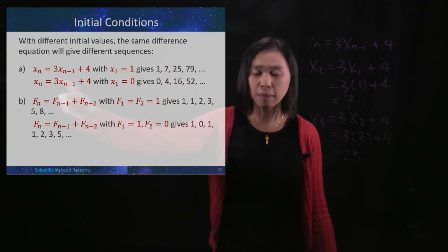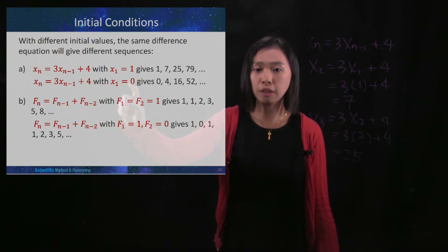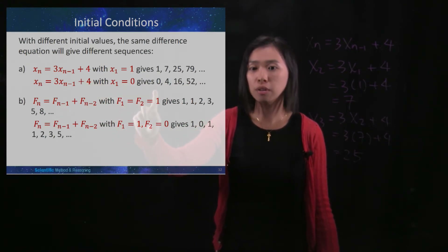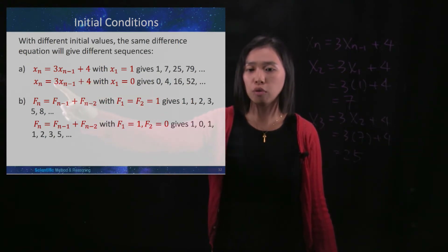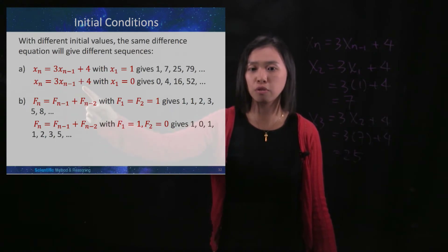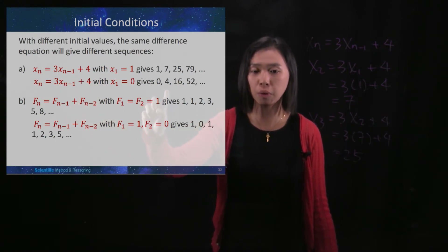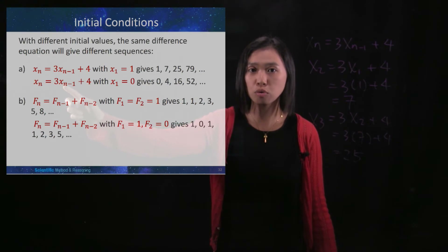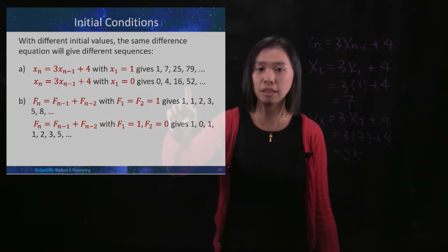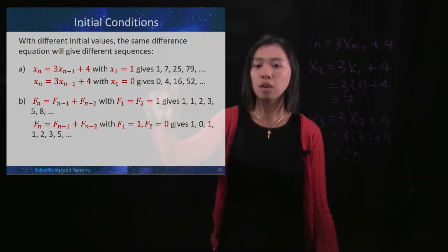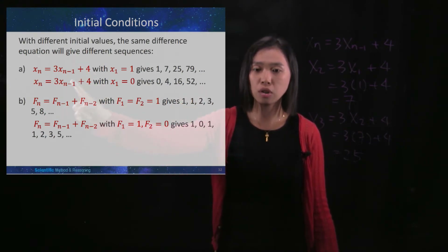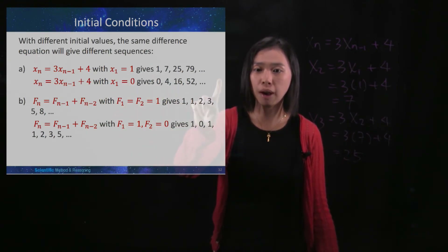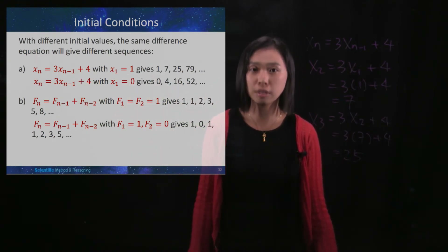With the same difference equation but a different initial value — starting with 0 — you get 3 times 0, which is 0 plus 4, so you get 4. Then 3 times 4 is 12 plus 4, giving you 16, and so on. Same equation, different initial condition, and you get a different sequence.